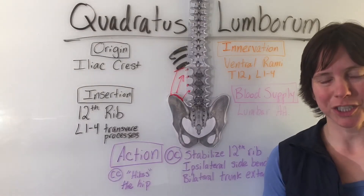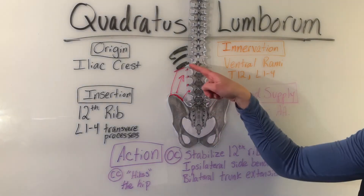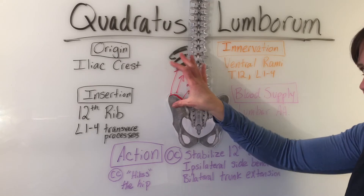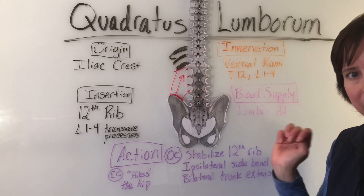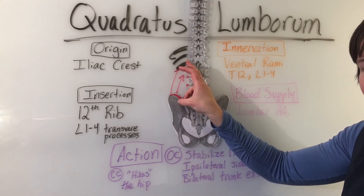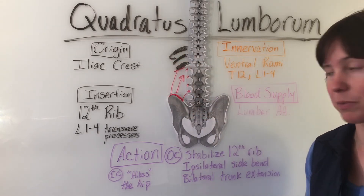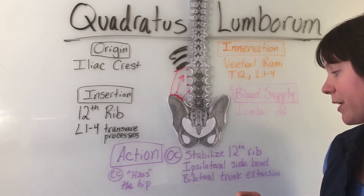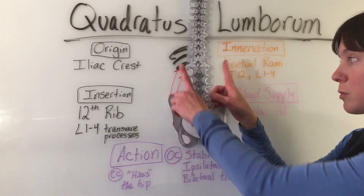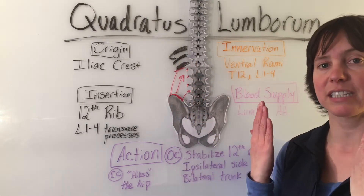The open chain actions for the quadratus lumborum are to stabilize the 12th rib, ipsilateral side bending of the trunk — meaning same-sided side bending — and bilateral trunk extension, where both sides contribute to the trunk extension.